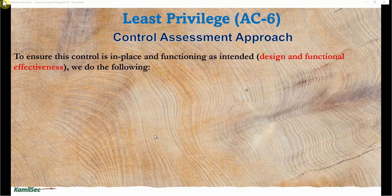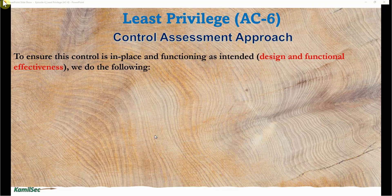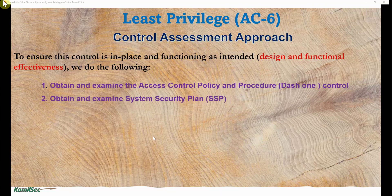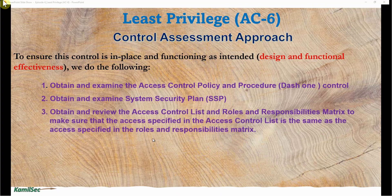Now let's look at the control assessment approach to ensure this control is in place and functioning as intended — that is, design and functional effectiveness. As always: obtain and examine the access control policy and procedure (the -01 control); obtain and examine the system security plan (SSP) — here we are looking at the implementation statement for AC-6; and third, obtain and review the access control list and the roles and responsibility matrix to make sure the access specified in the access control list matches the access specified in the roles and responsibilities matrix.